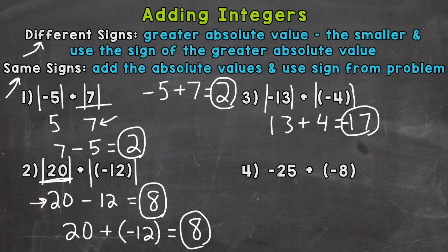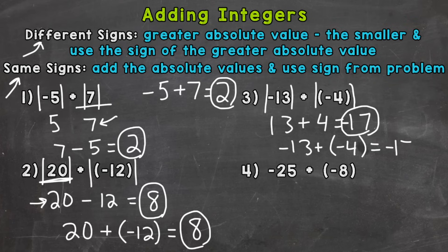Using mental math: negative 13 plus a negative 4. We are starting at a negative number, negative 13, and we are adding a negative 4. So we are decreasing in value — going down by 4. If we start at negative 13 and decrease in value by 4, going left on the number line by 4, we end up at negative 17.